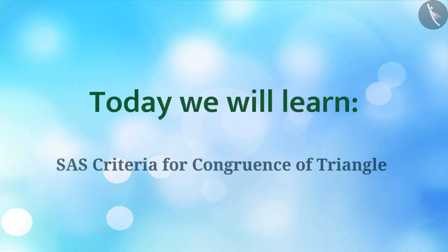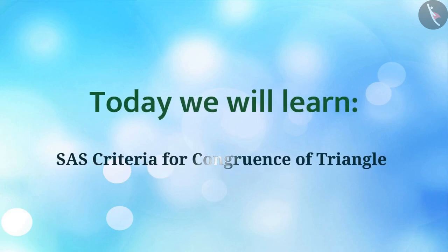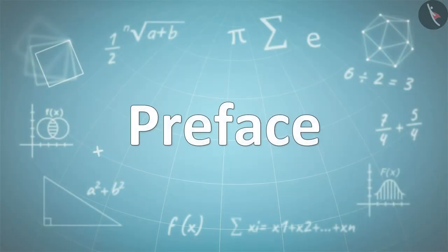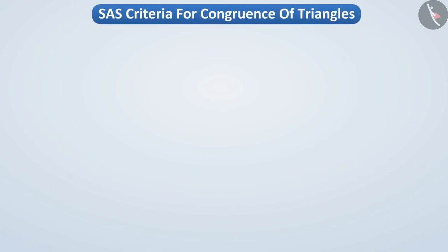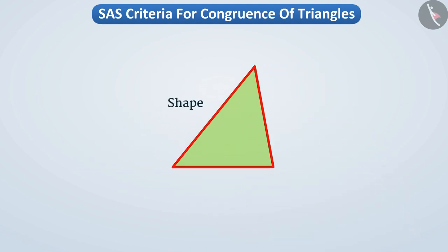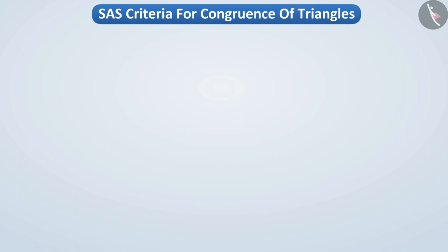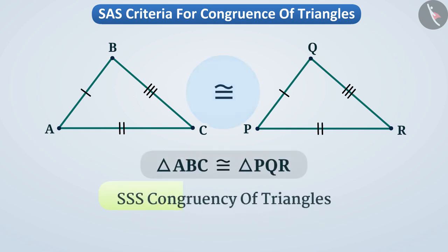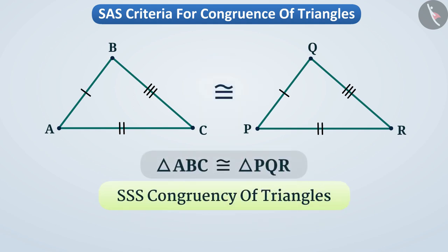Today we will learn the SAS criteria for congruence of triangles. Two triangles are congruent if they are copies of each other such that the shape and measurement of both triangles are equal and when superposed, they cover each other exactly. In the previous video, we discussed SSS congruency. Now we will discuss SAS congruency.